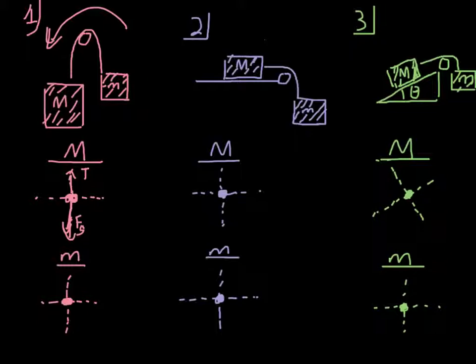For little mass m, I have force of gravity going down. I expect tension going up to be larger than the force of gravity going down — that's why little mass m is going to go up, it's going to accelerate upward.